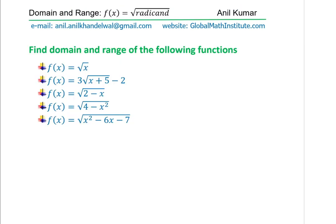Question number 12. In question number 12, we have actually combined quite a few and we need to find the domain and range of following functions. The parent function is given to you as square root of x and then we have transformed this in different ways: 3 square root of x plus 5 minus 2, square root of 2 minus x, and then we have combined this radical function with a quadratic function. Square root of 4 minus x square, square root of x square minus 6x minus 7.